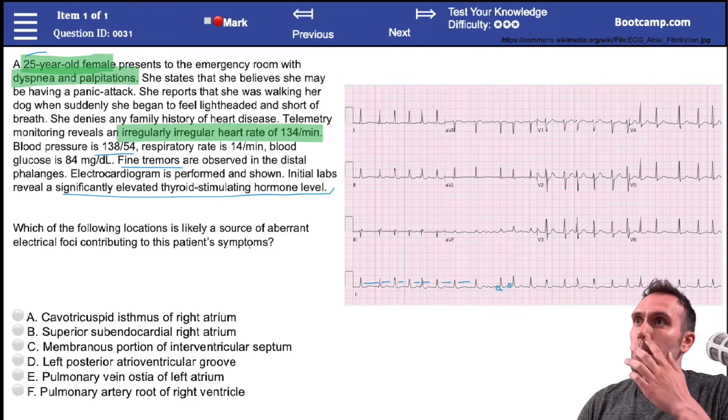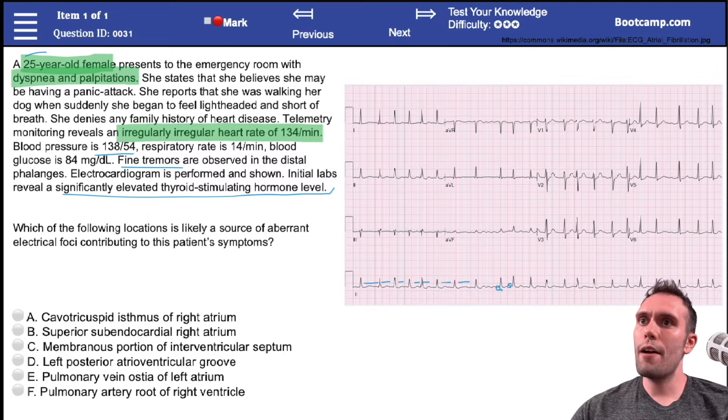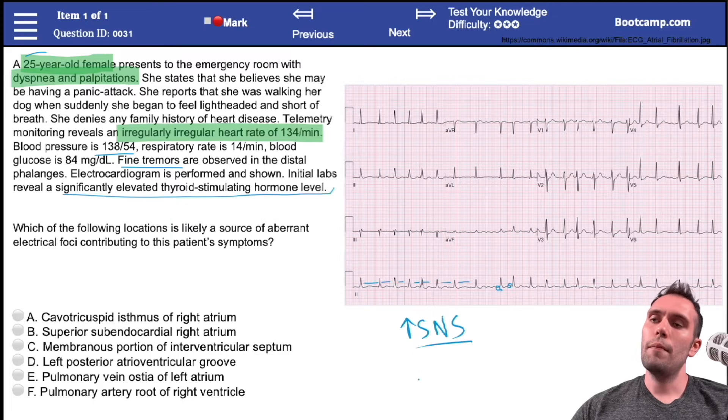Which of the following locations is likely a source of aberrant electrical foci contributing to the patient's symptoms? Another thing I want to say really quickly: if we have hyperthyroidism, usually you're going to have very high levels of catecholamines.